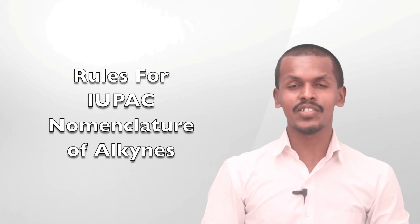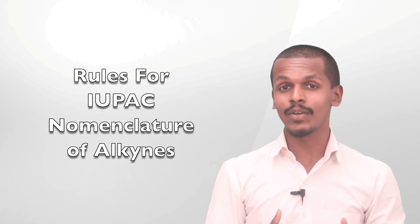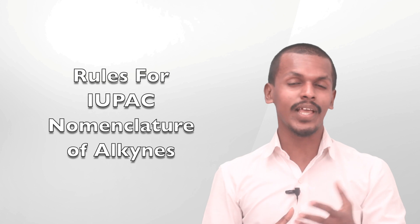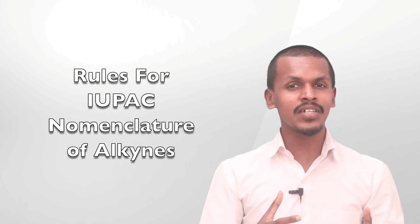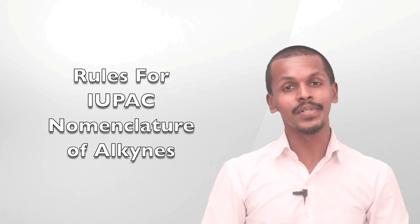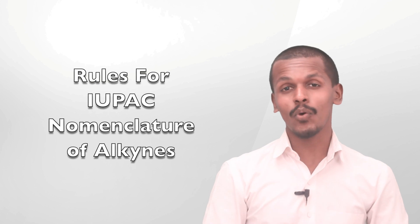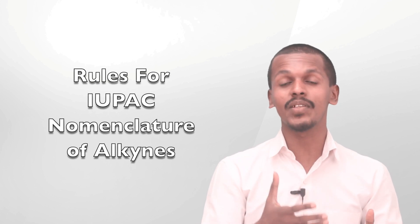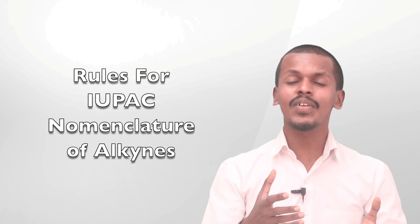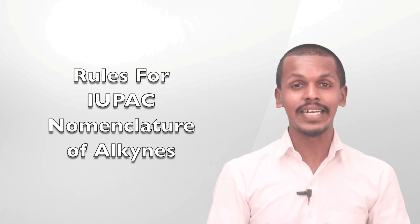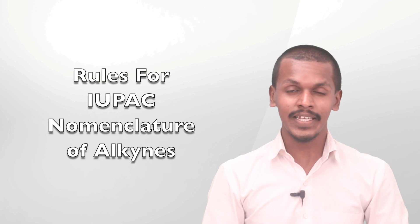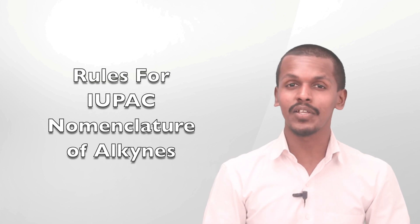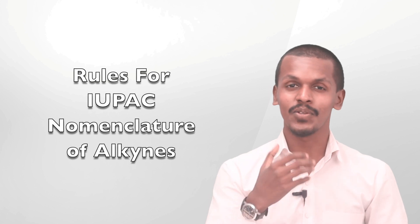Hello friends. In the previous lecture we studied about what alkynes are and their general formula, and we considered a few examples along with their IUPAC names. It is very necessary to understand the rules of IUPAC nomenclature of alkynes so that we can name them correctly. We have done similar work for alkenes, and now we are going to do a separate lecture on IUPAC nomenclature of alkynes.